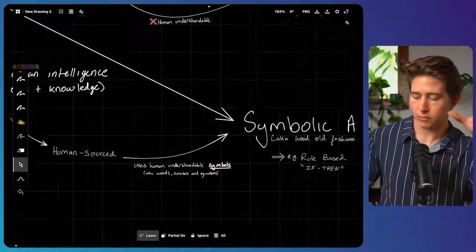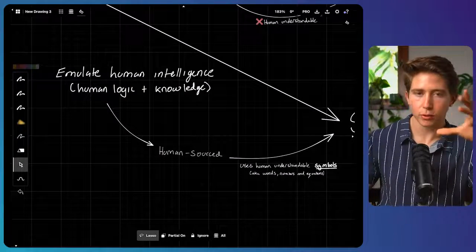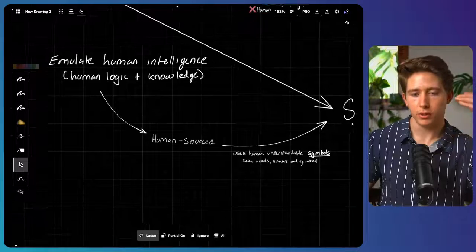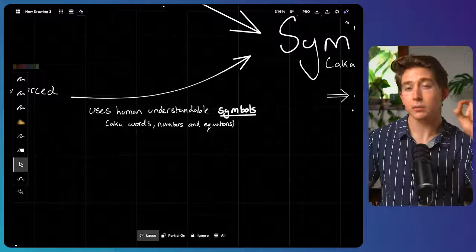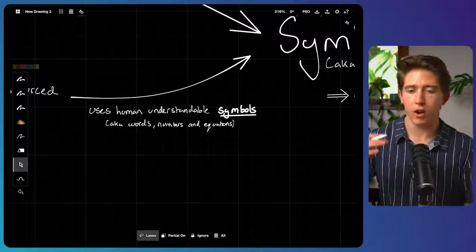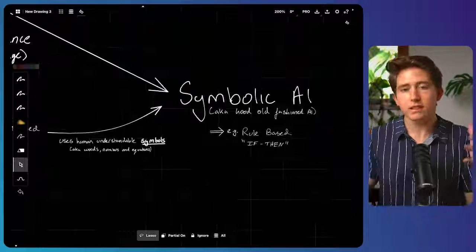And the reason why it's called symbolic AI is because it's built off human logic and human knowledge. And so it's sourced from humans. And so we use human understandable symbols, aka words, numbers, or equations, in symbolic AI. It's built off human understandable symbols. And that's why we call it symbolic AI.